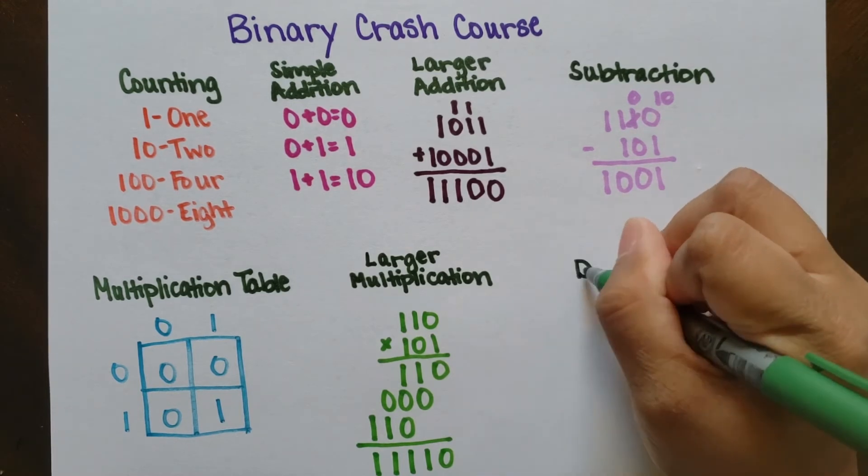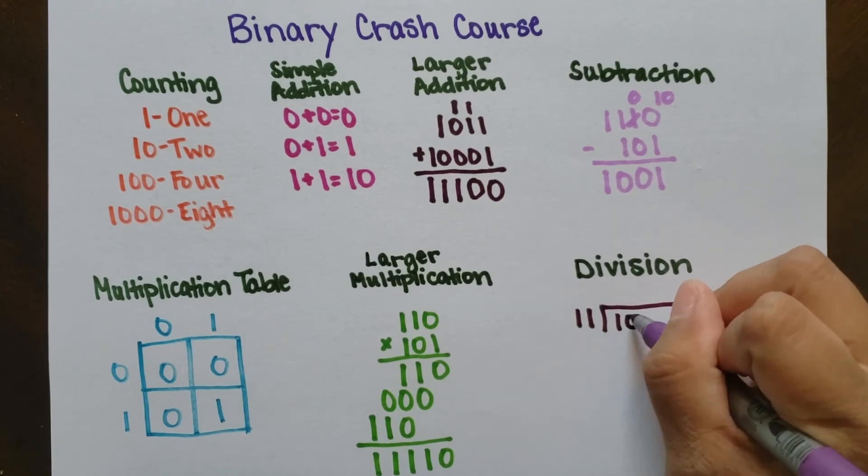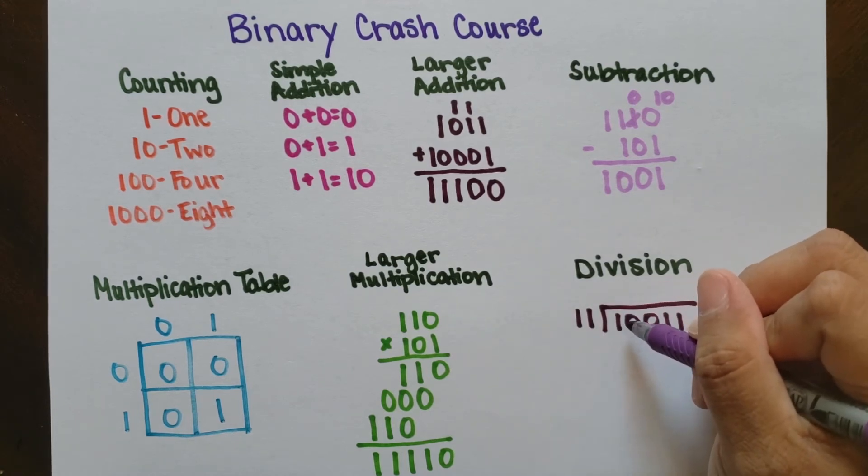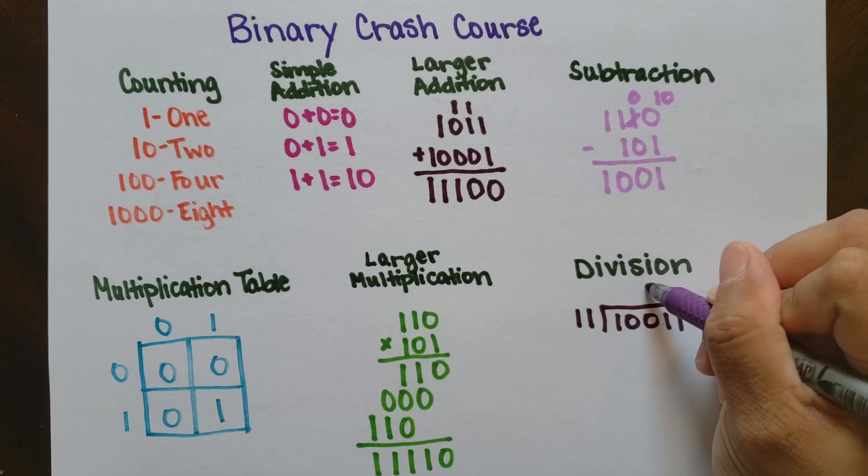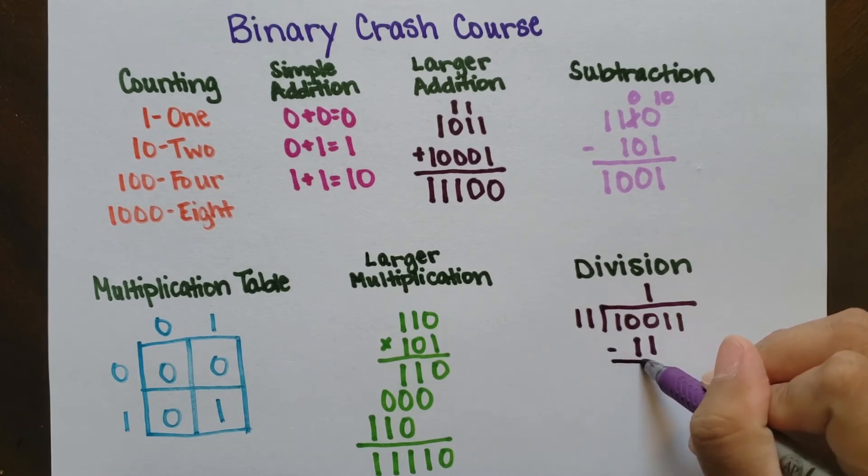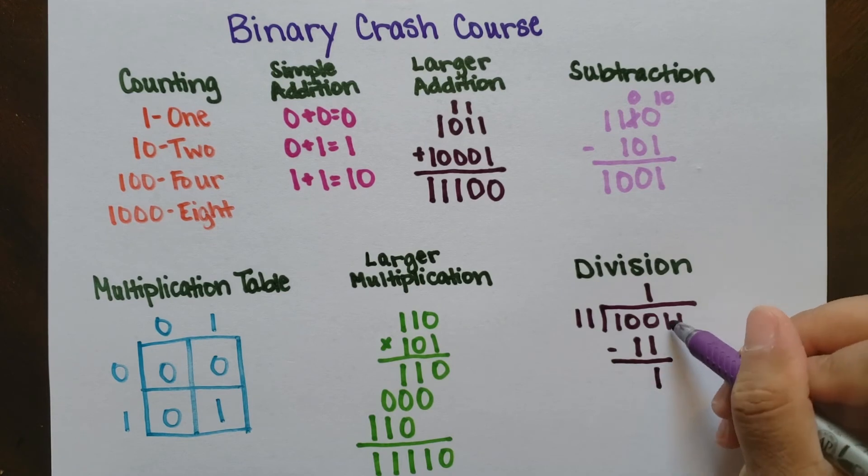So let's finish things up with division. I'm going to take 10011 and divide by 11, or in other words 19 divided by 3. The first number that 11 will fit into is 100, and it will fit in there one time. So I'll write a 1 above the final 0. 1 times 11 is just 11, and I subtract that. That's the same thing as 4 minus 3, which is 1, and then I bring down the next 1 over.